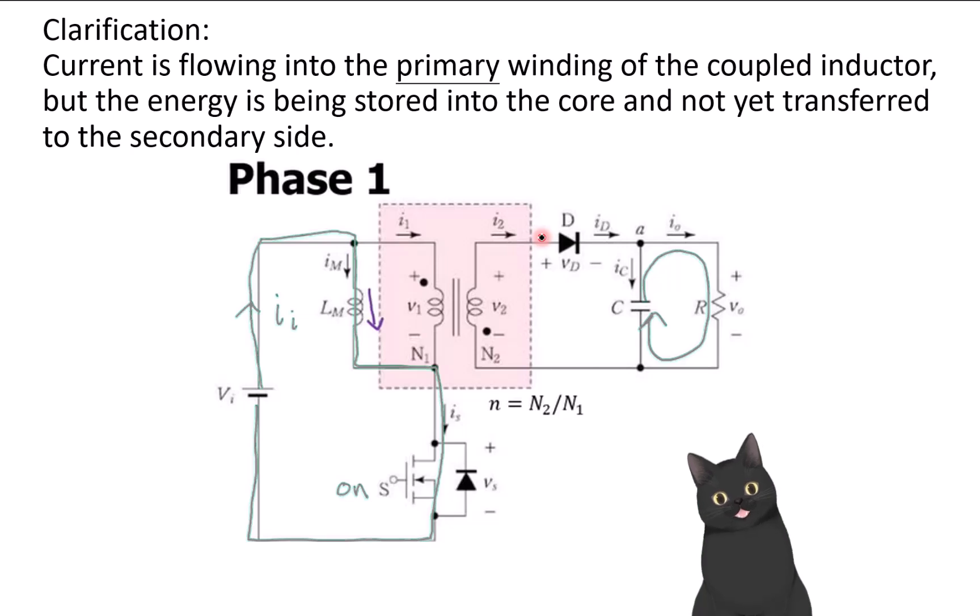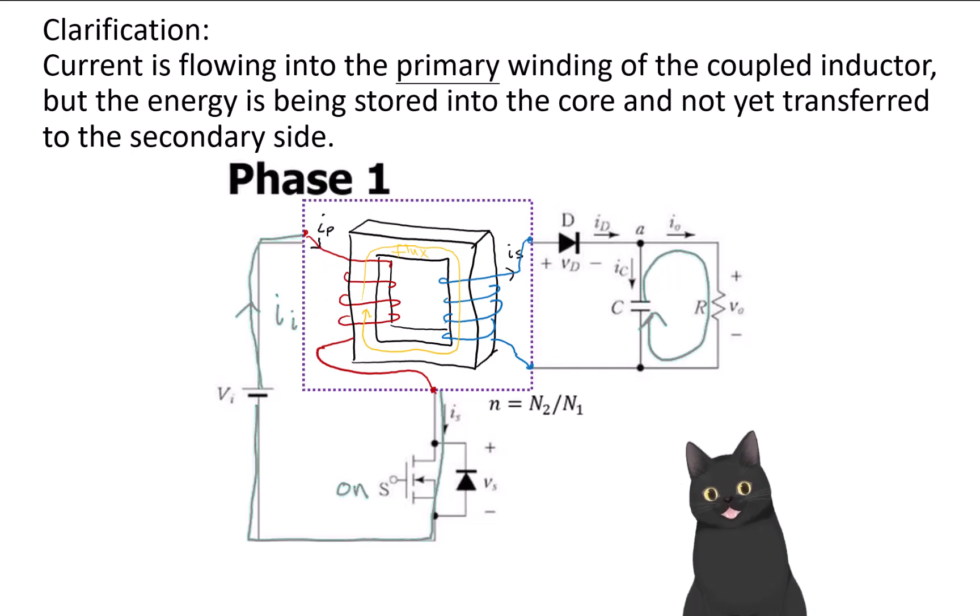But remember that these components are all idealized versions. We're modeling real life. They are ideal components. But when we go to real life, we see that current would be, yes, going into the primary side and going out here. That's where people get confused.